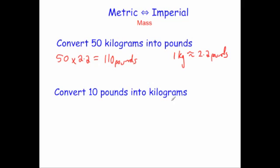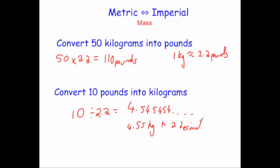Finally, we want to go back from pounds into kilograms, so now we're going to divide by 2.2. So we're going to do 10 pounds divided by 2.2, and when you do that, you get 4.545454 and so on, which equals 4.55 kilograms to two decimal places.